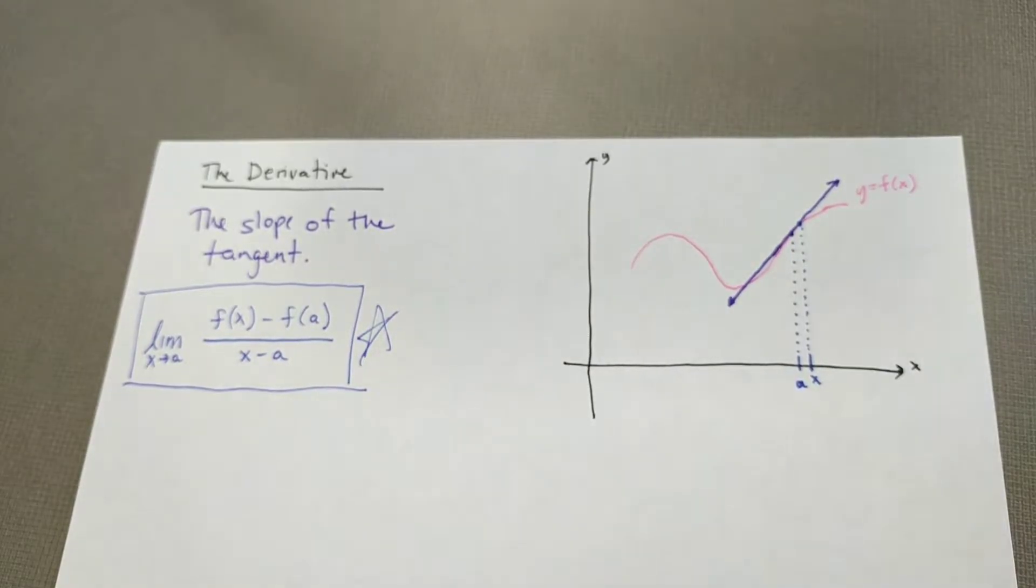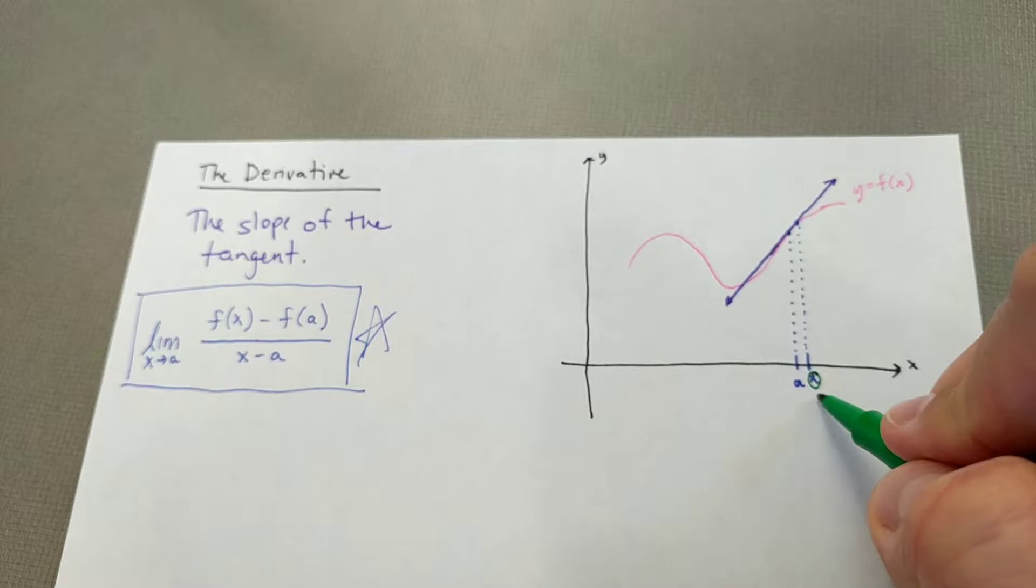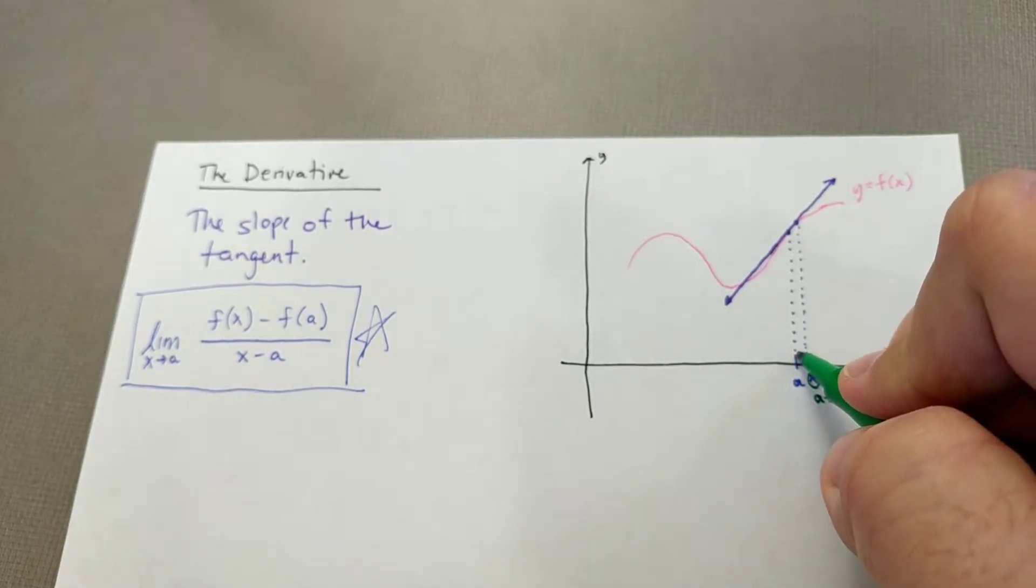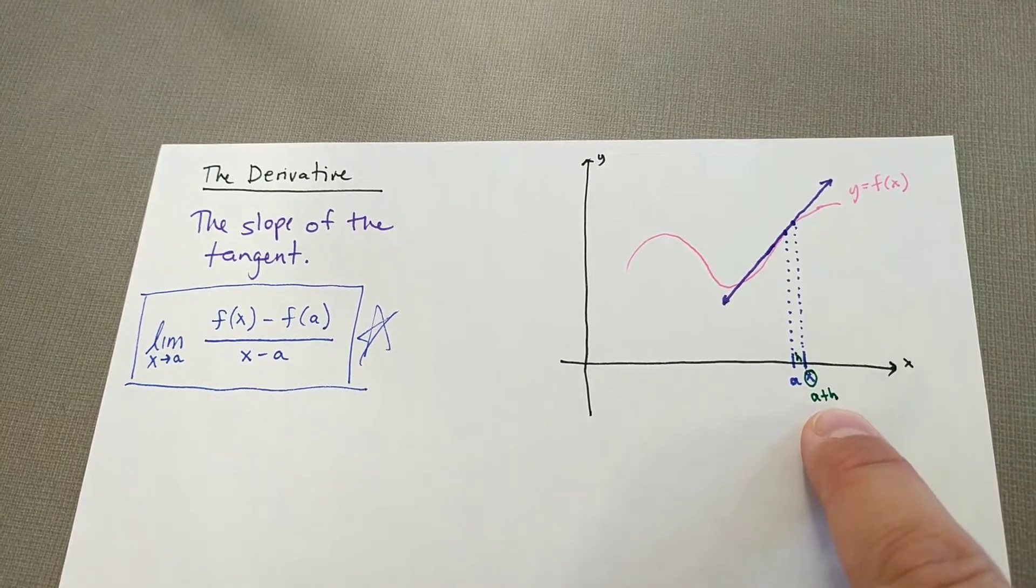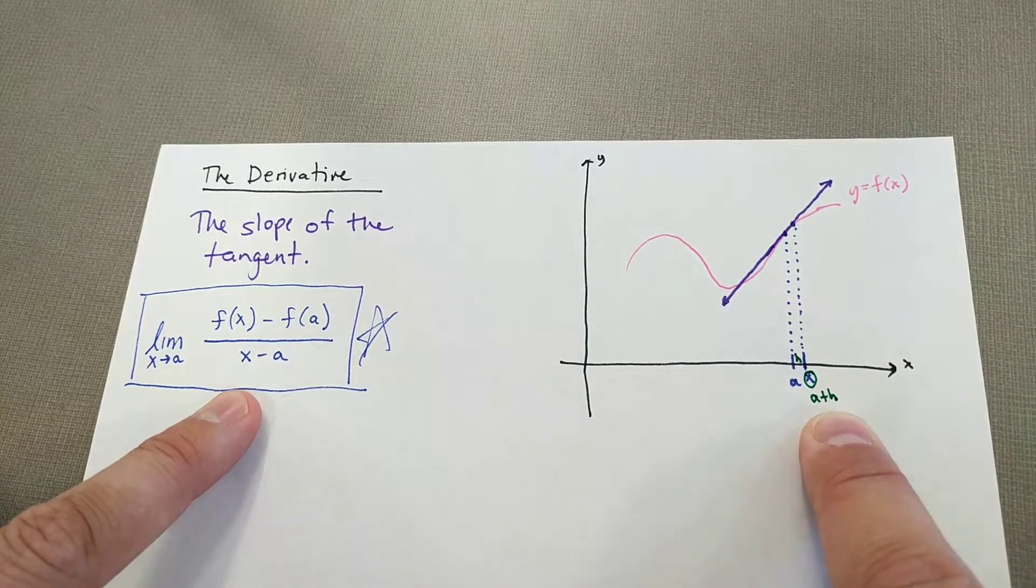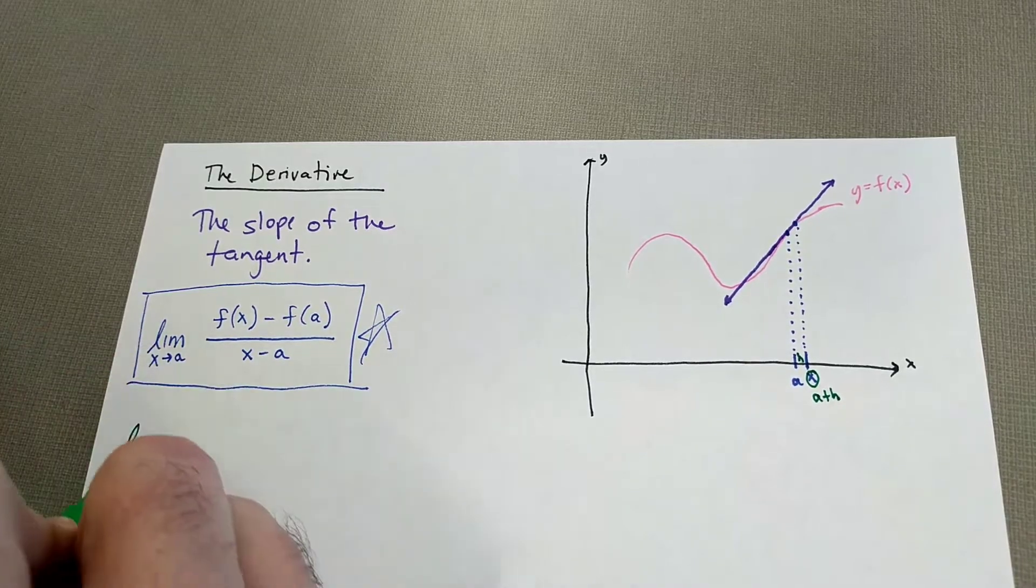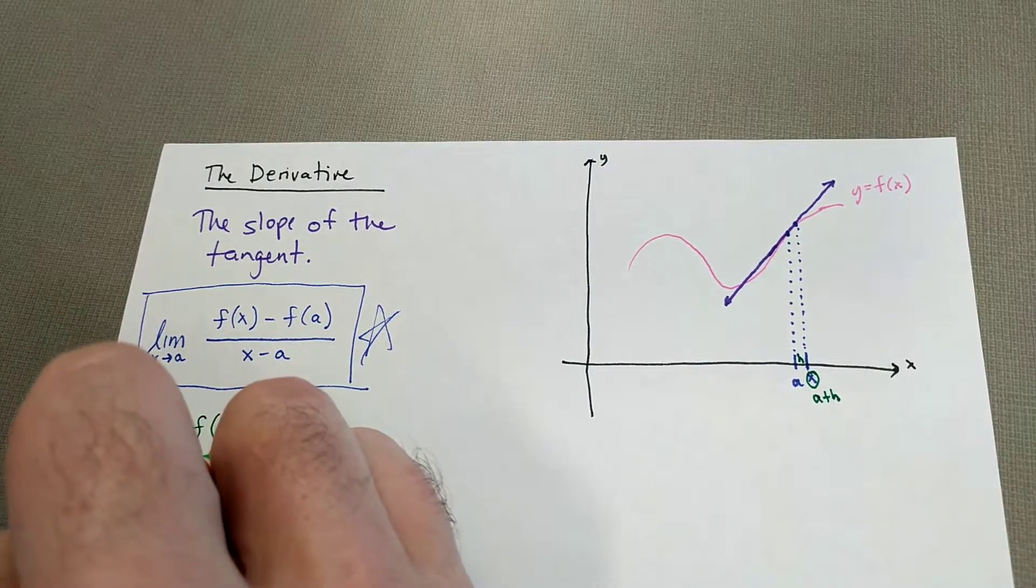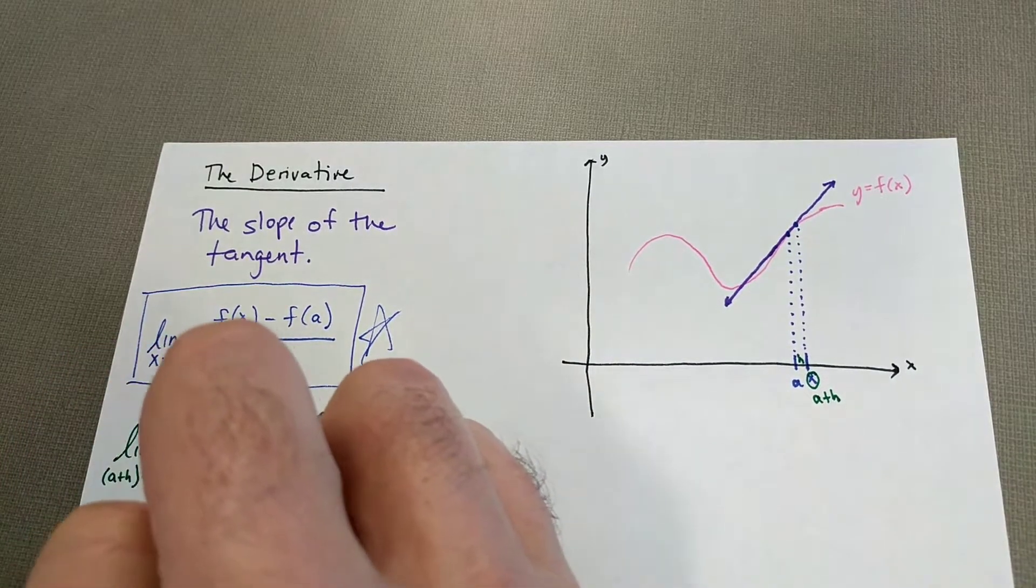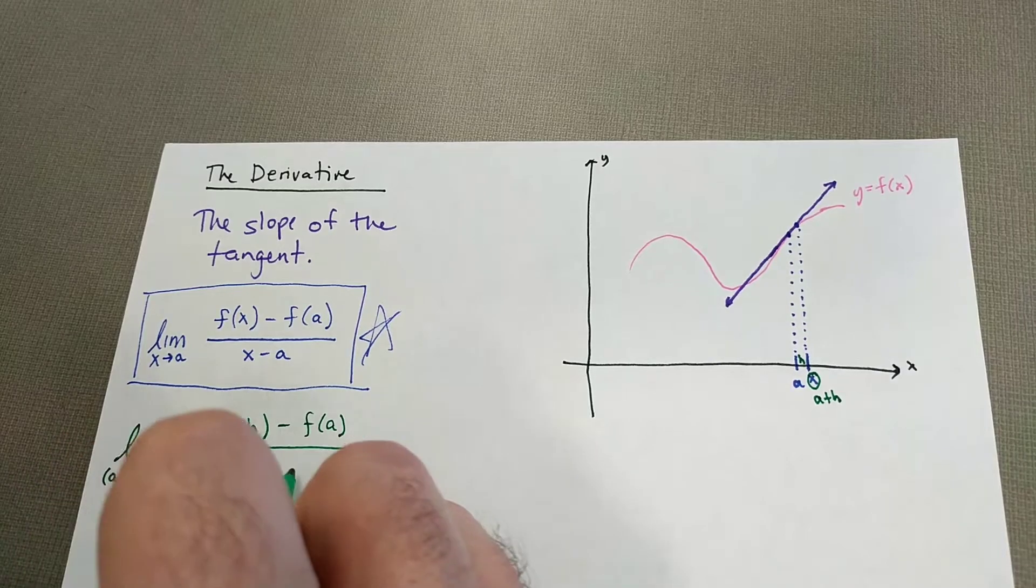Okay, but there is a different formula that we could come up with, and it just has to do with sort of how you decide to label things. So here I called this X, but what if I called this instead A plus H? Because I'm going to call the distance in between my two points H. So that would mean that this X value becomes A plus H. Well, let's see how that changes our formula over here. So instead of X's, I want A plus H. So we're going to go the limit as A plus H approaches A of F of A plus H minus F of A all over A plus H minus A.